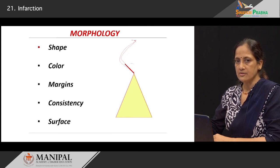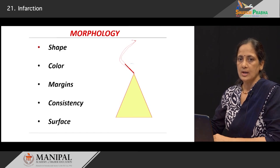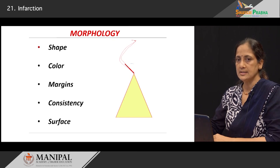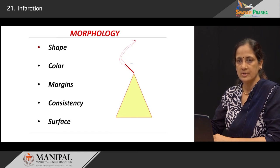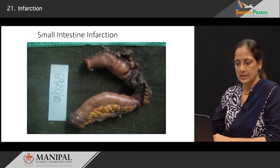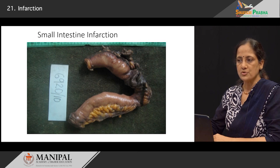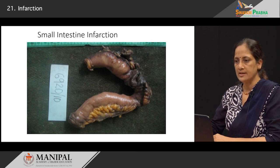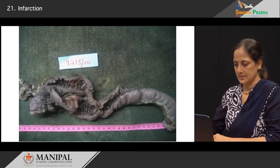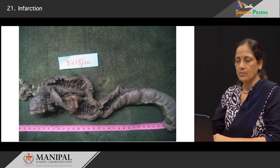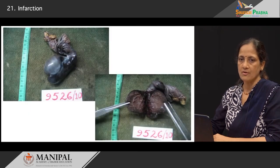On the cut surface, that area will show the color and softer consistency. The capsule of the involved organ will show opacification, which is normally translucent and shiny. For example, in a segment of small intestine that has undergone infarction because of a mesenteric vessel being occluded by a thromboembolus, the serosal surface of the uninvolved portion is shining and glistening; however, the involved portion appears dull and opaque. This is another example of infarction of the small intestine after mesenteric thromboembolism. Another specimen shows the testis which has undergone complete infarction following torsion around its pedicle.